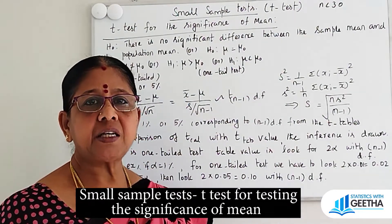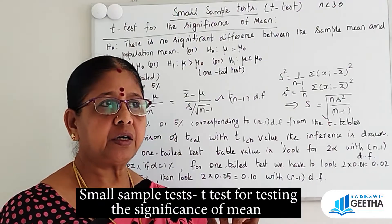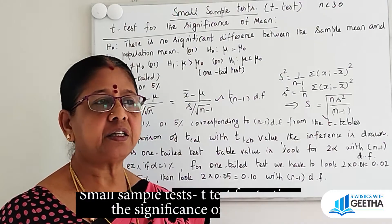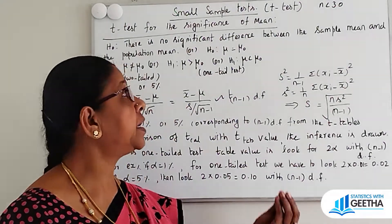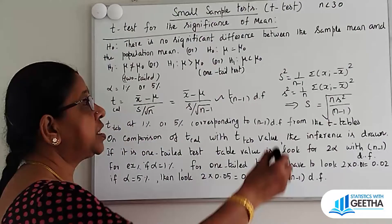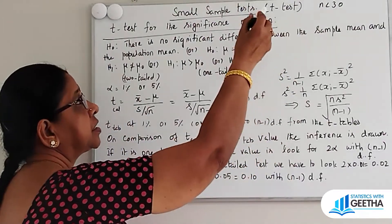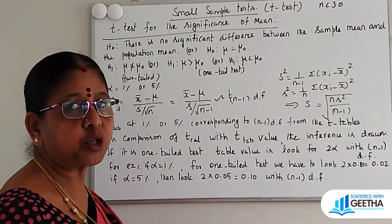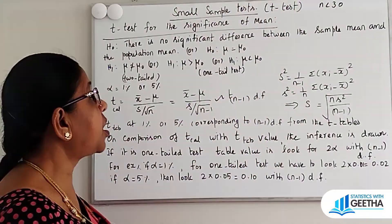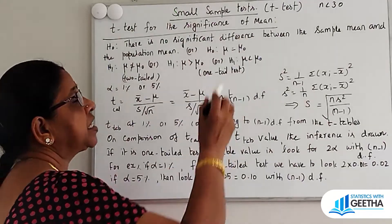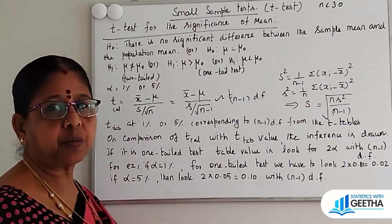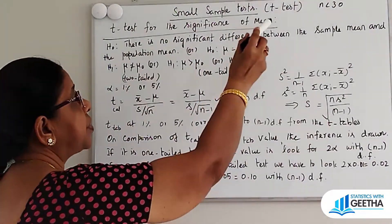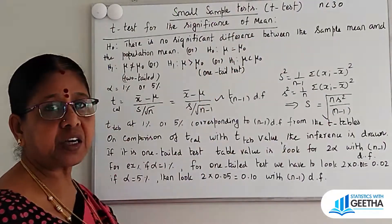The sample size, if it is less than 30, they are coming under small samples. So less than 30 are going to be small sample tests. The first test is T-Test for the significance of mean.